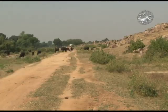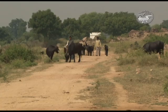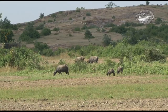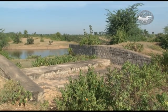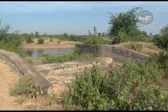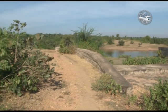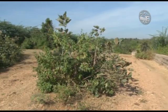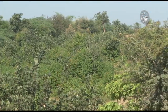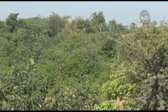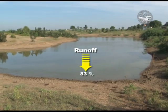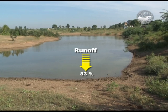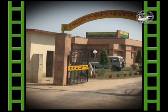Biotic interferences and stray cattle are a threat to the establishment of a good forest cover in the region. A protected forest watershed over a period of 10 years has helped in increasing the natural regeneration by seven-fold with 100% canopy cover and reduced the runoff by 83% over the unprotected forest watershed.